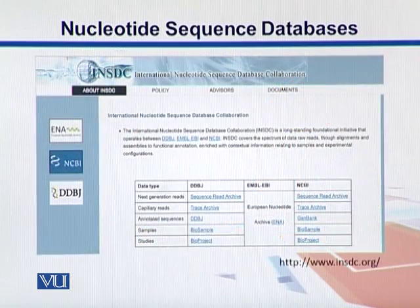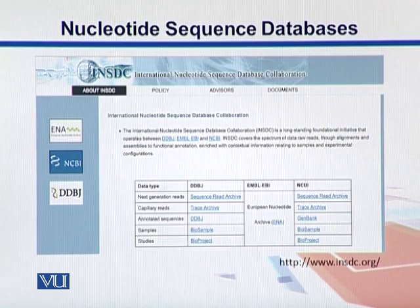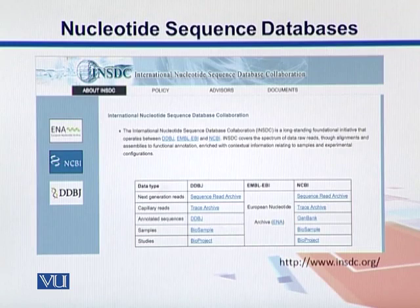Here is the page for INSDC. As you can see, all three collaborators' logos are there. Looking at the data, we can have next-generation sequence reads, capillary reads, and information about different samples and slides on this first page. We can get our next-generation sequence data from this archive, which we will start working with further in this course.